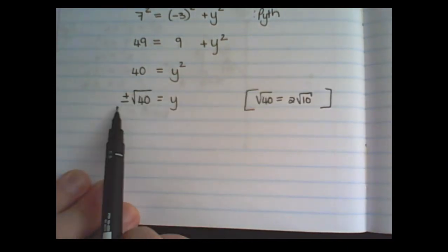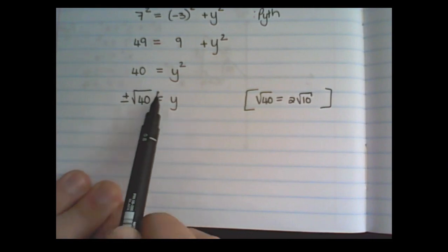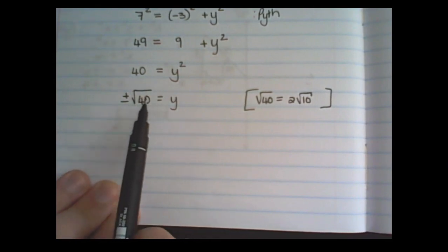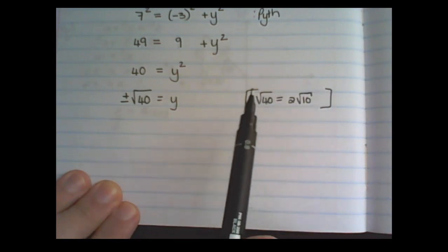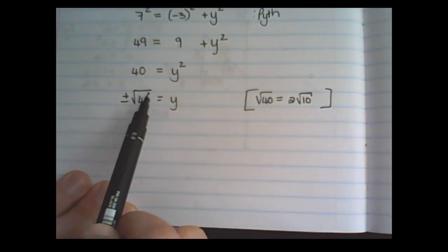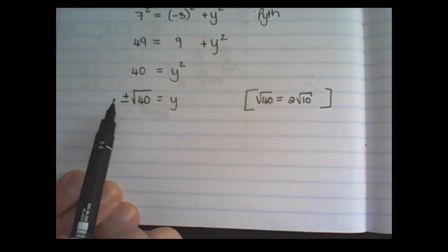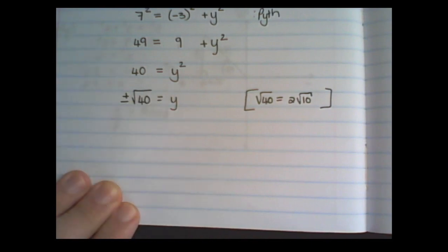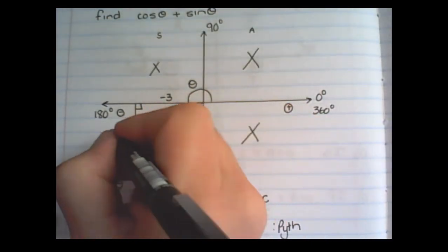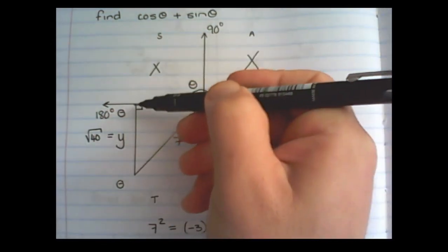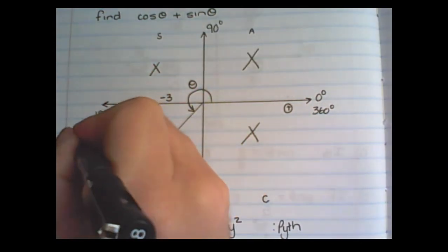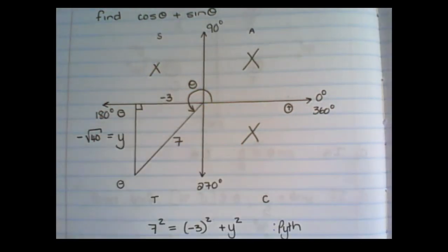Just a note. It's okay to have a square root value. In grade 11, we are going to revise how to rewrite surds. But for this example, we are going to continue with the square root of 40. So the y value then is the square root of 40. But we are going down, so it is negative square root of 40.